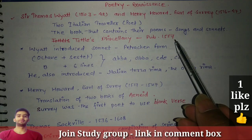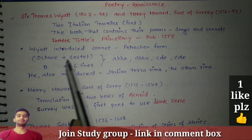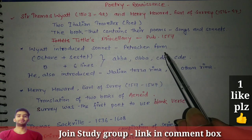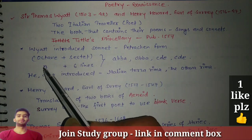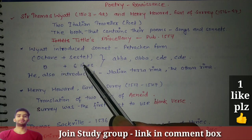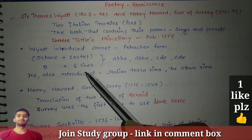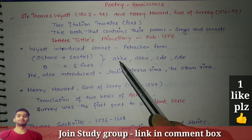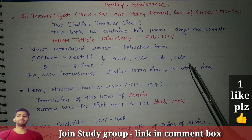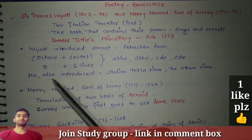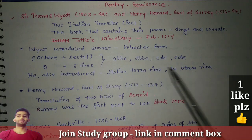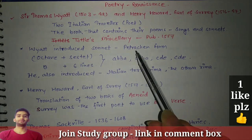Tottel's Miscellany got published in 1557. Wyatt introduced the sonnet and chose the Petrarchan form — it has an octave plus a sestet. The octave has eight lines and the sestet has six lines, with the rhyme scheme: ABBAABBA CDECDE. He also introduced the Italian terza rima and the ottava rima. So remember: Wyatt introduced three things — the Petrarchan form, terza rima, and ottava rima.